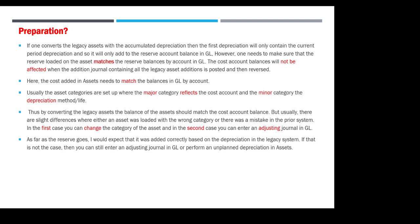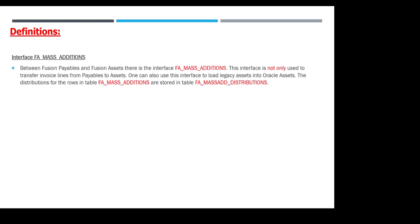As far as the reserve goes, you would expect it was added correctly based on the depreciation in the legacy systems. If that's not the case, you can still enter an adjusting journal in GL or perform unplanned depreciation in assets. Regarding definitions: the interface FA_MASS_ADDITIONS is used between Oracle Payables and Oracle Assets. This interface is not only used to transfer invoice lines from Payables to Assets — it's also used to load legacy assets into Oracle Assets. Distribution rows are stored in FA_MASS_ADD_DISTRIBUTIONS.